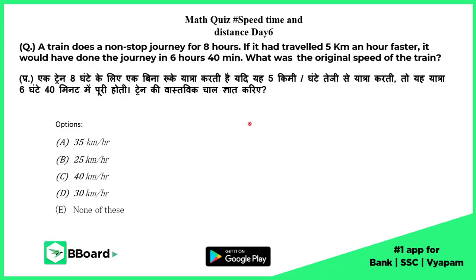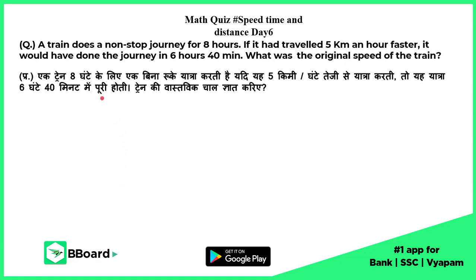Hello students, welcome to bboard. Let us see the solution of this question. A train does a non-stop journey for 8 hours. If it had traveled 5 kilometers an hour faster, it would have done the same journey in 6 hours 40 minutes. What was the original speed of the train? The options are 35, 25, 40, and 30.